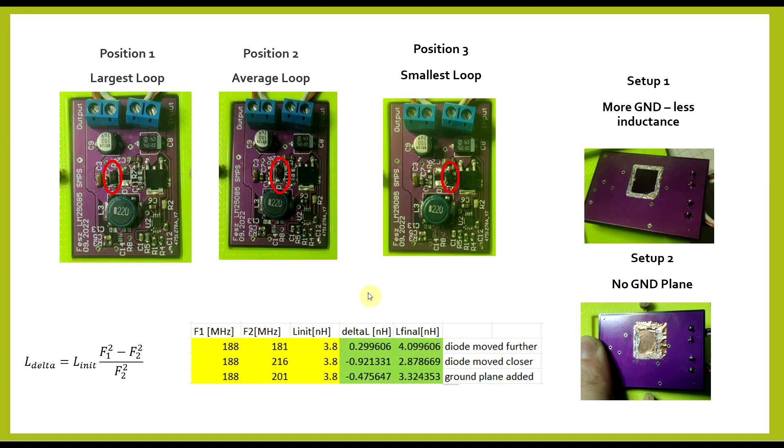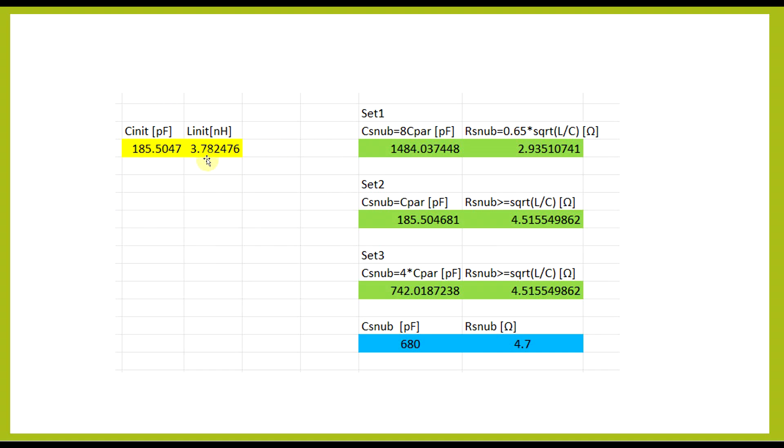But anyway, in the final version of the board, I did keep the hole in the ground plane and the diode in its normal position. So taking the capacitance and inductance values that we measured for these two, we can determine various sets of snubber component values. So depending on the exact sets of formulas you use, you will get different sets of values.